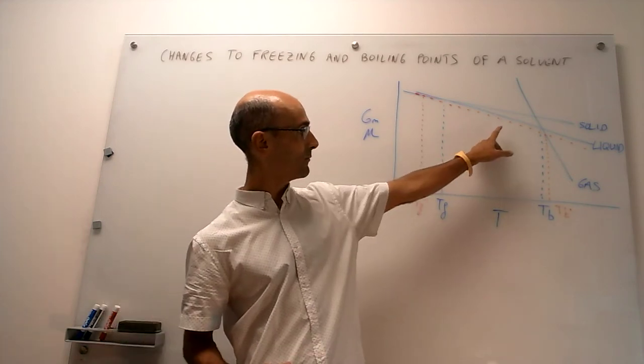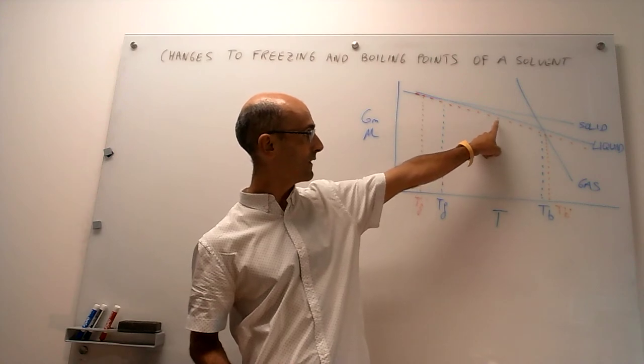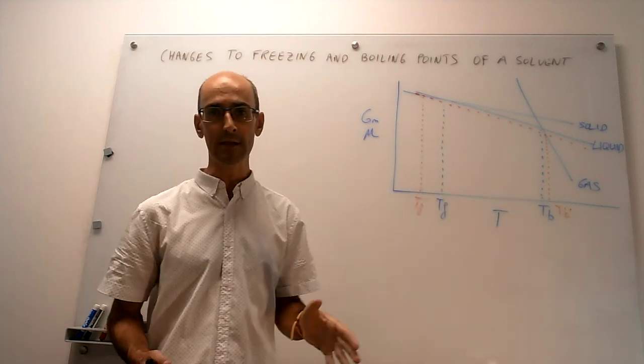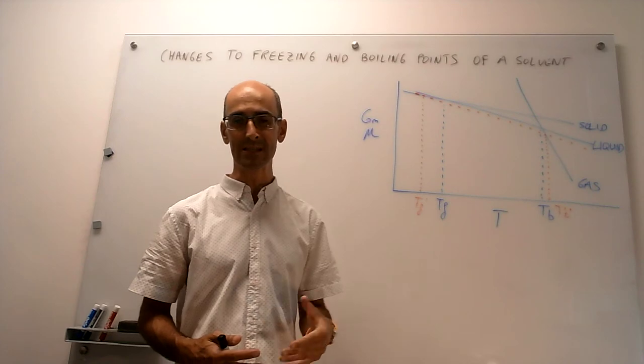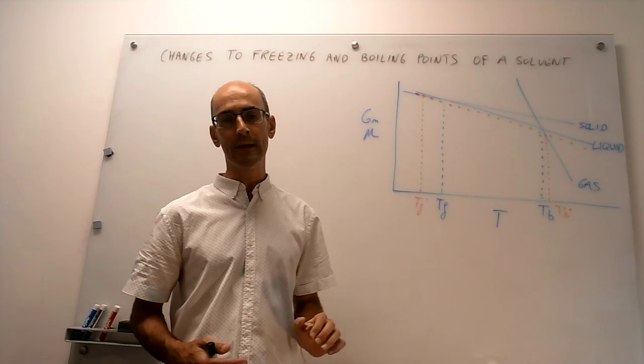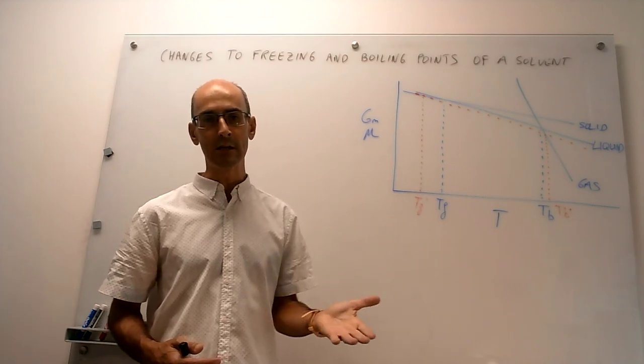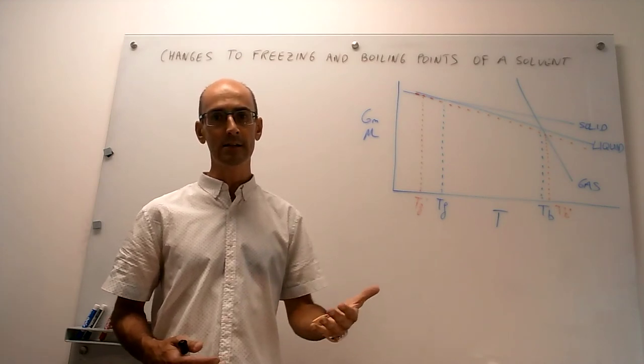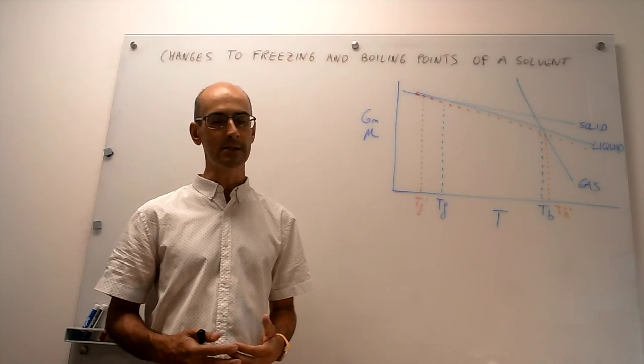So what happens is that because the only changes happen to the liquid phase, that's the only phase in which the solute can exist, what happens is that there's a depression of that chemical potential. The chemical potential of the solvent gets lowered by the presence of the solute.